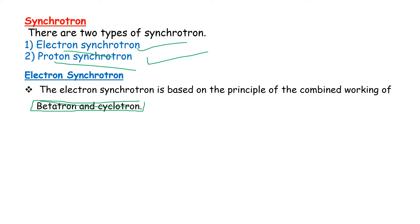These are low energy oscillators. The previous cyclotron operates at low energy with circular acceleration. So this is the principle of electron synchrotron combined with cyclotron. The principle is very important — the principle is an MCQ topic.